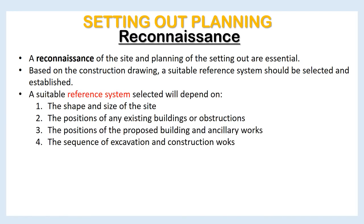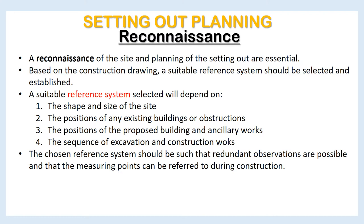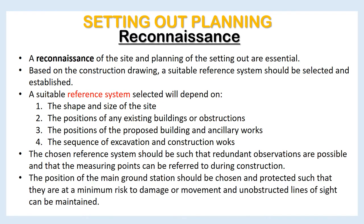A suitable reference system selected will depend on: 1. The shape and size of the site; 2. The positions of any existing buildings or obstructions; 3. The positions of the proposed building and ancillary works; 4. The sequence of excavation and construction works. The chosen reference system should be such that redundant observations are possible and that the measuring points can be referred to during construction. The position of the main ground stations should be chosen and protected so that they are at minimum risk of damage or movement, and unobstructed lines of sight can be maintained.